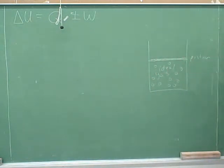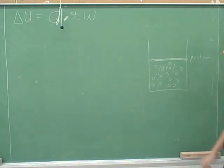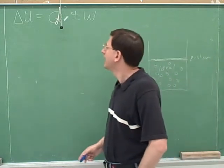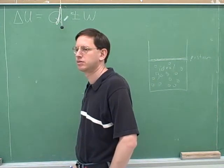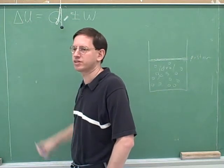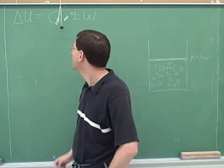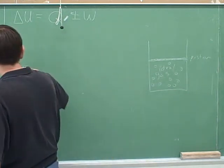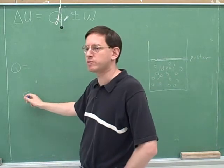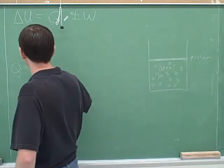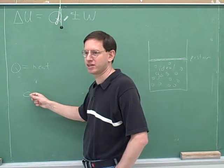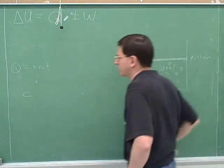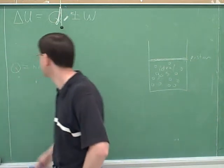Delta U reflects the change in temperature. Q stands for heat transfer — not specific heat. Lowercase c was the specific heat, which is how much energy it took to raise one kilogram by one degree Celsius, and that's a different number for each substance. Here we're just talking about heat transfer, Q.